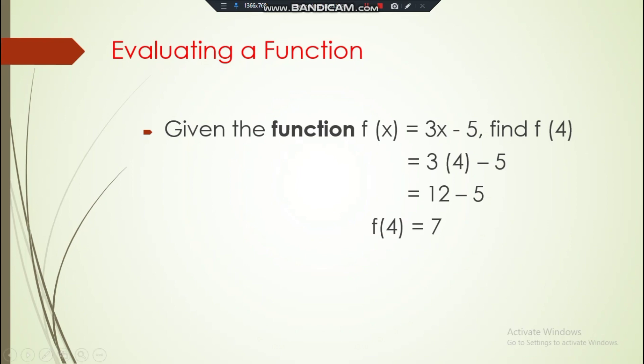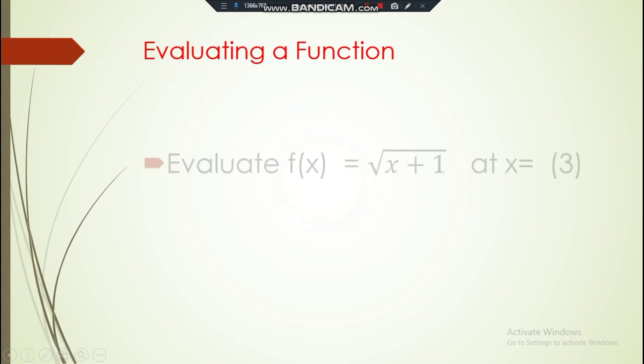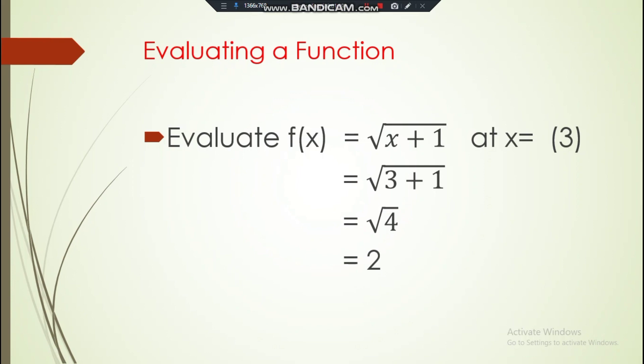Now example number 2: evaluate m(x) = √(x + 1) at x = 3. First thing to do is substitute. So our x will become 3: √(3 + 1). And then after that we simplify. It will become √4, simplify and you will get an answer of 2.